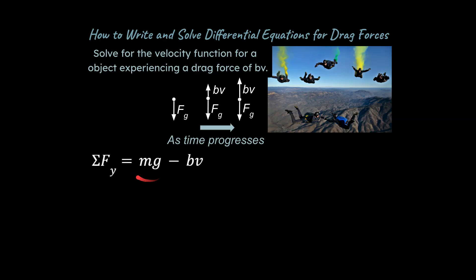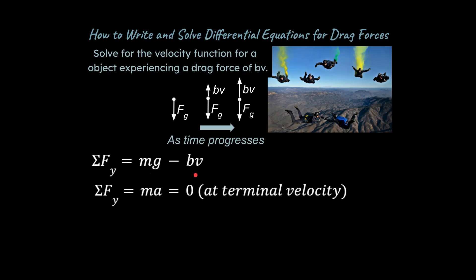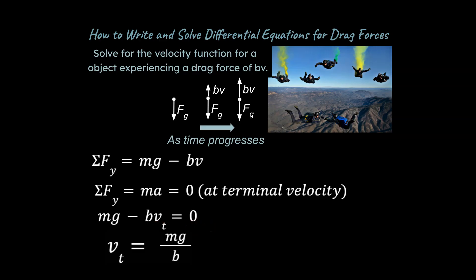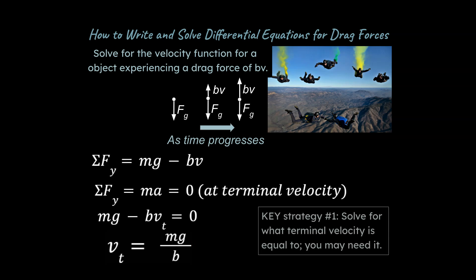We're going to call the force due to gravity mg minus bv. The second line of the sum of the forces strategy is Newton's second law: sum of the forces equals ma, and at terminal velocity the acceleration is zero. Setting these equal to each other, the force due to gravity equals bv_t, and isolating for v_t gives us mg over b. You will likely need this on an FRQ and may need to come back and insert it as you work the problem.